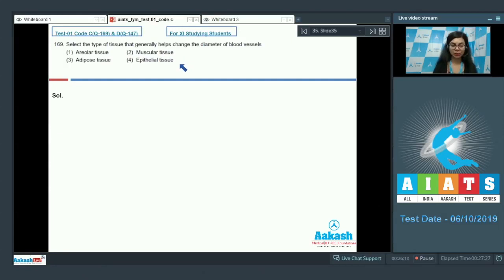It can decrease also, and it can increase also, depending upon the need of the body. So muscular tissue is the tissue which brings on the changes in the diameter of blood vessels. The correct answer here is 2.